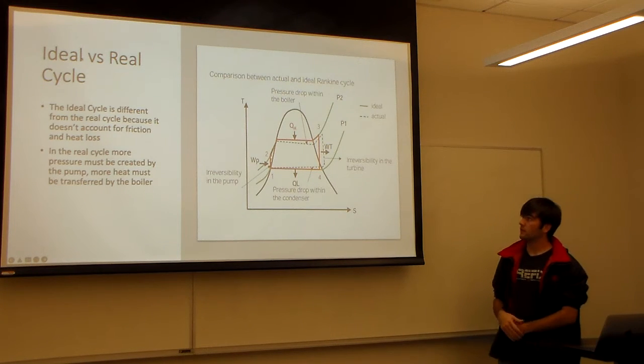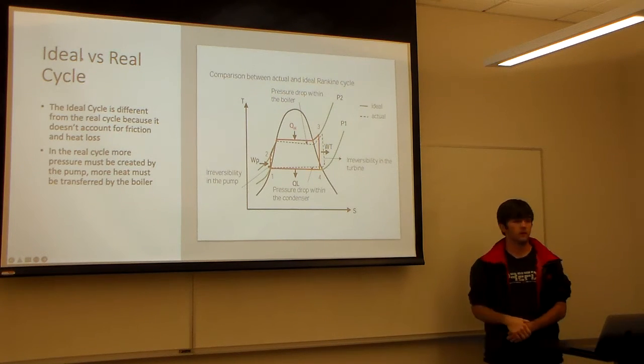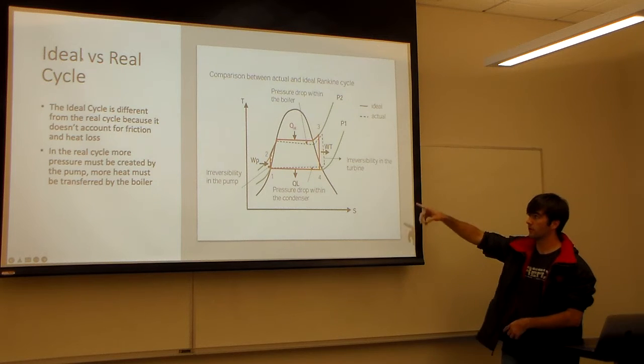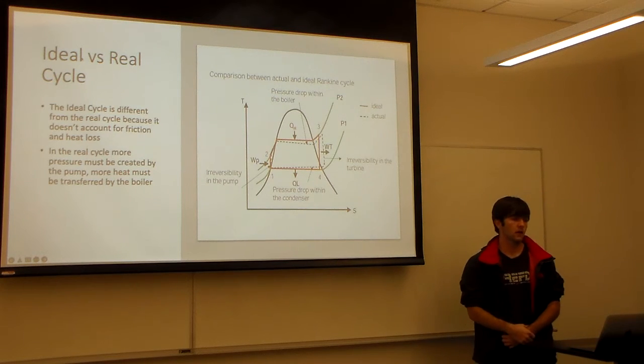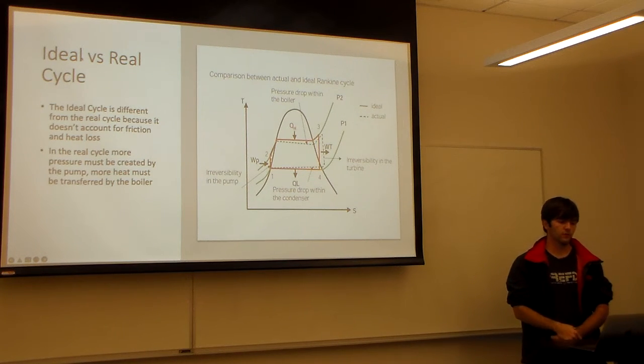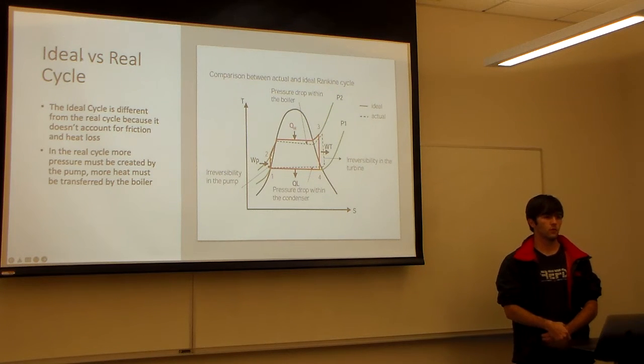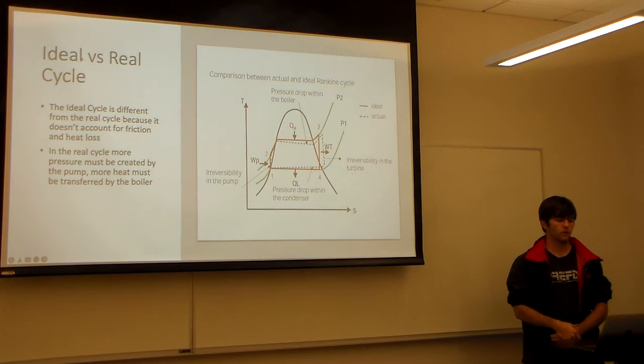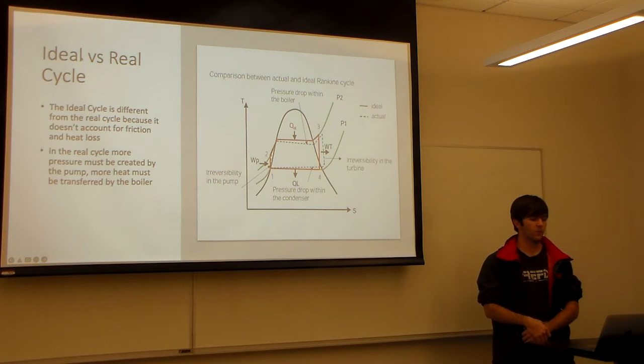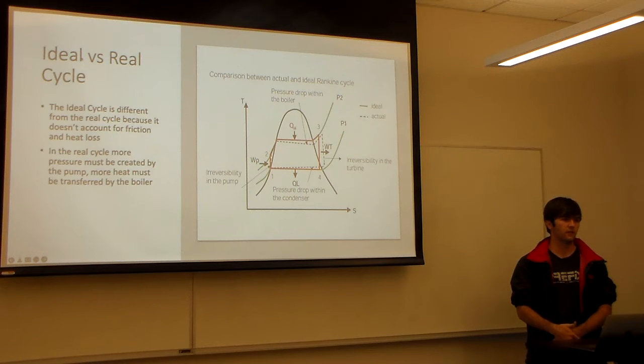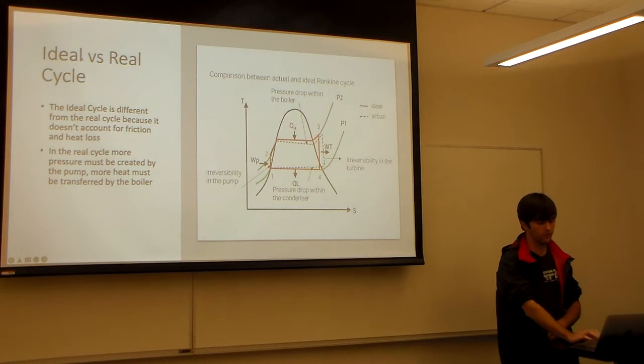And then this is a picture basically comparing the real versus ideal cycles. The ideal cycle is the dashed line and the real cycle is the solid red line. The ideal cycle differs from the real cycle because it doesn't account for friction or heat loss. So in real life you have to have a higher pressure created by the pump and more heat transferred by the boiler to get the same work output by the turbine.